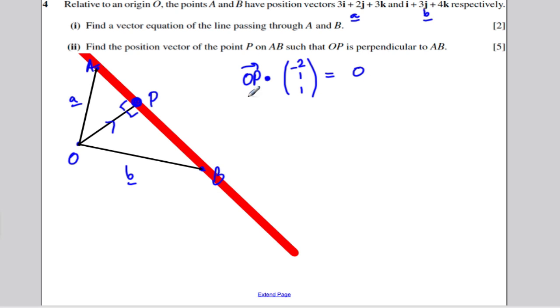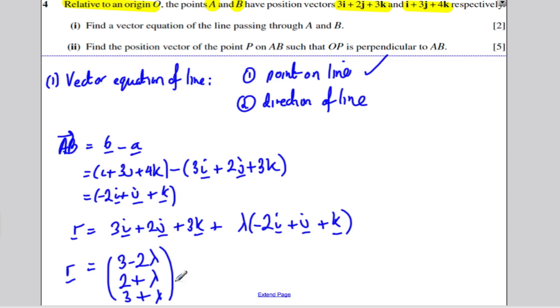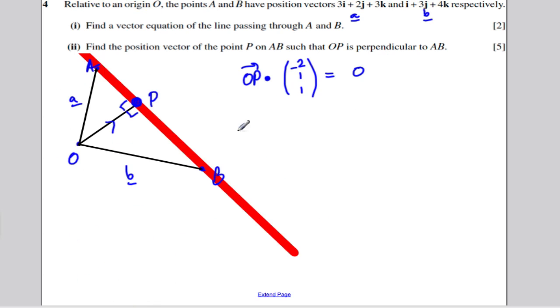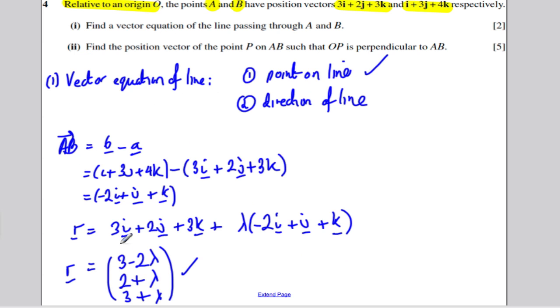Now, I also know that P is a point on the line. So it can have a position vector in this form. It has a position, it's on that line. So for some lambda, it has a position that works for that lambda.